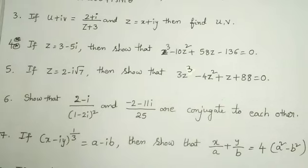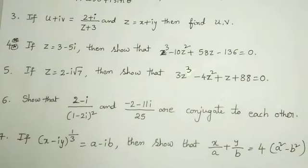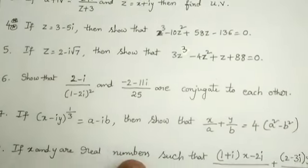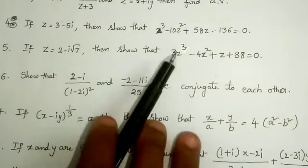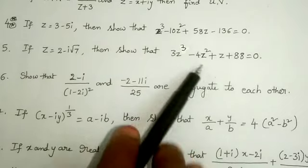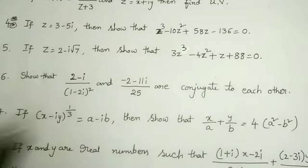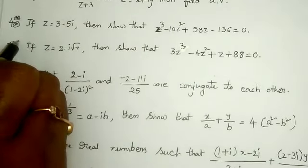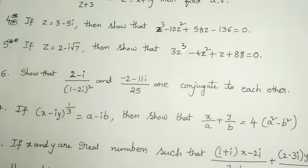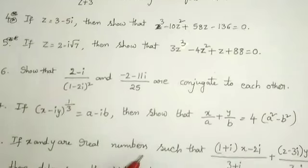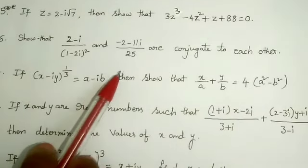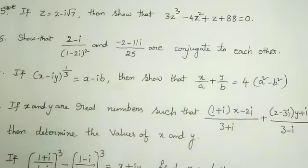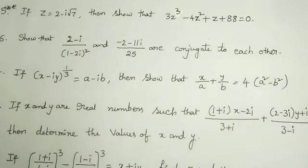Next one: if z is equal to 2 minus i root 7, then show that 3 times z cubed minus 4z squared plus z plus 88 is equal to 0. This is also a most frequently repeated question. Next one: show that 2 minus i by 1 minus 2i whole square and minus 2 minus 11i by 25 are conjugate to each other. This is also a most important question.